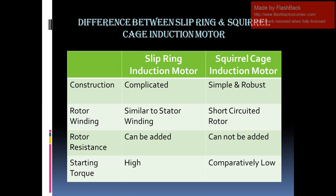Let us start with the construction. In case of the slip ring induction motor, construction is complicated because of the presence of slip rings as well as brushes. In case of squirrel cage induction motor, the structure is simple and highly robust.